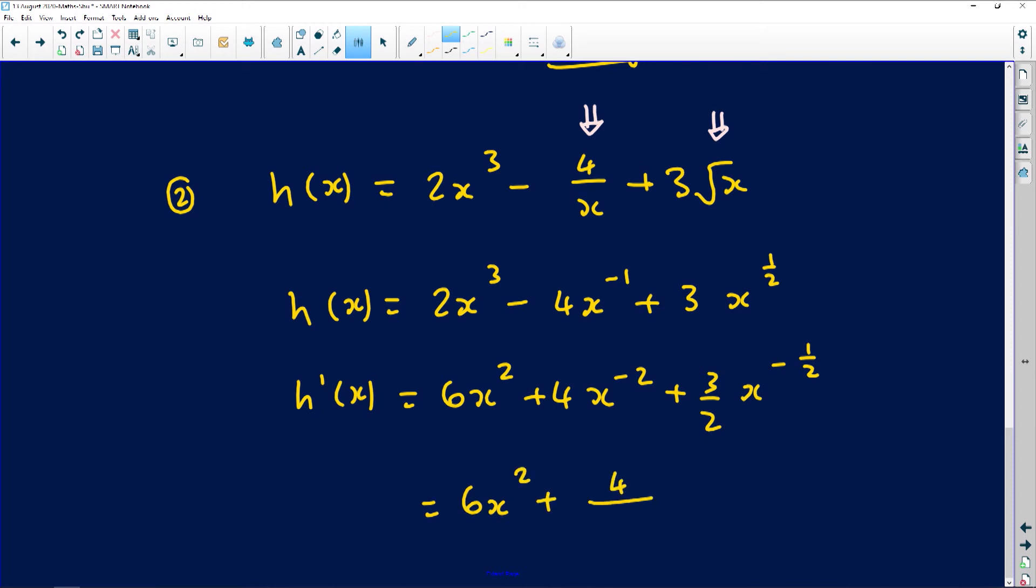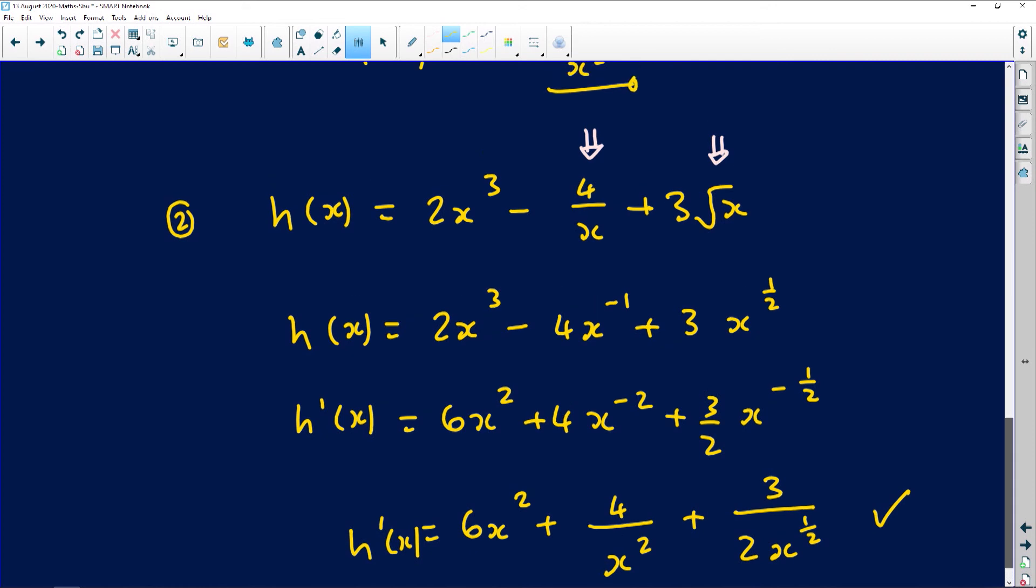Always get into the habit of writing your exponent with positive values. So this is going to be 4 over, take it back underground, it's going to be x squared plus 3 over. Now this x to the minus half is going to go and join 2. So it's going to be x to the half. And that would be the derivative of h if you are just using the concept of the power rule.